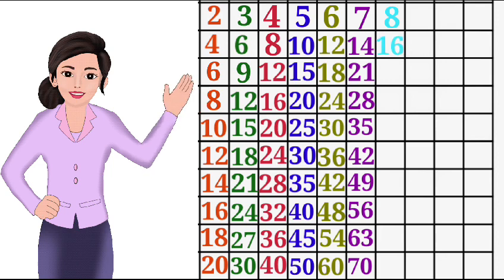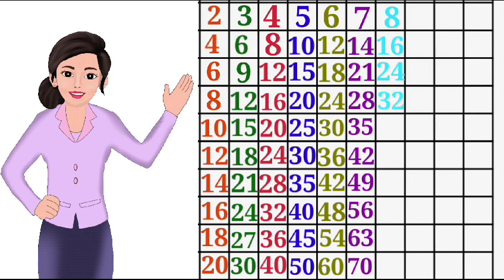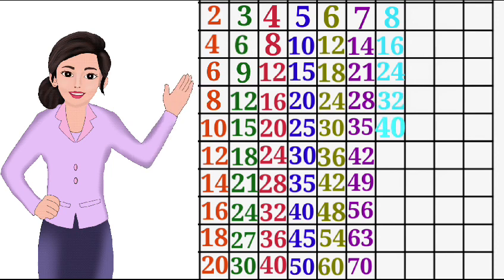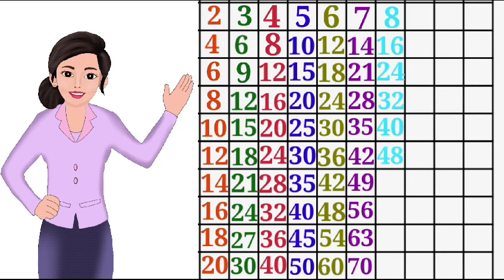8 3s are 24, 8 4s are 32, 8 5s are 40, 8 6s are 48.